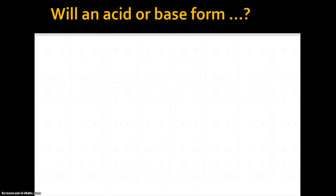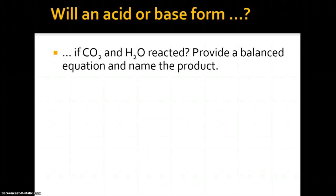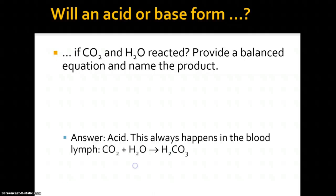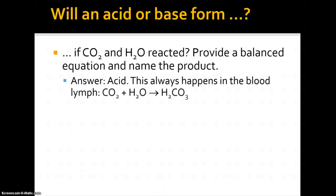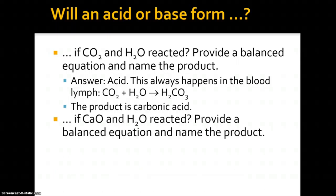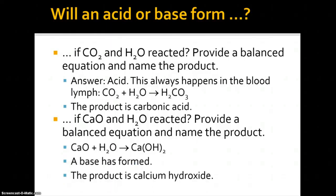Finally: if CO2 and H2O are reacted, will an acid or base form? Provide a balanced equation and name the product. The answer is an acid — this always happens in the blood and lymph. CO2 and H2O produce carbonic acid, H2CO3. If CaO and H2O are reacted, will an acid or base form? The answer is a base: CaO and H2O make calcium hydroxide, Ca(OH)2, which is a base.